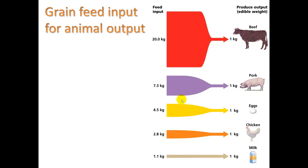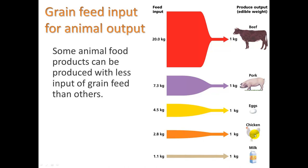Let's take a look at grain feed input. Animals in feedlots are not free-range — they are living off of grain provided to them. For a cow, it takes 20 kilograms of feed input, usually corn, to make one kilogram of beef. For pork, it takes 7.3 kilograms. The most efficient is dairy: 1.1 kilograms of feed input to produce one kilogram of milk. Chickens are also pretty efficient. Some animal food products can be produced with less grain input than others.